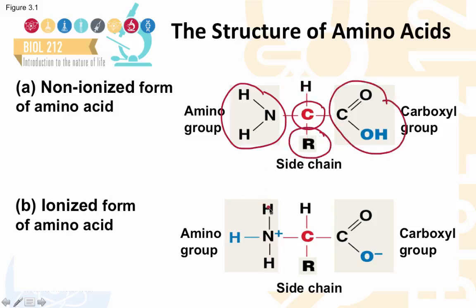In the ionized form of an amino acid, the nitrogen atom on the amino group gains a proton, gaining a positive charge, whereas the carboxyl group loses a proton, gaining a net negative charge.